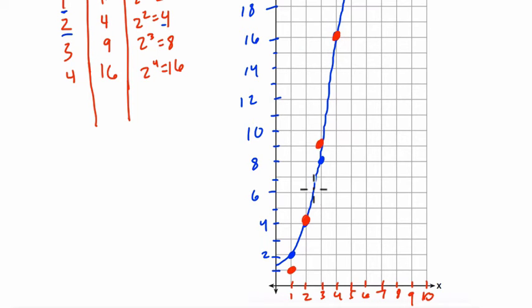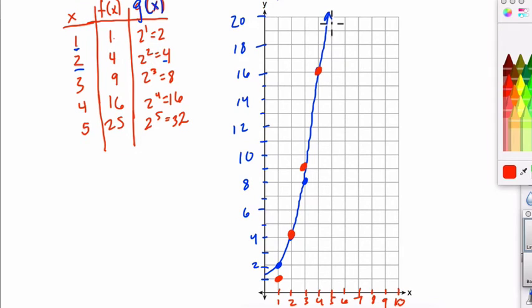Now, before I sketch this, I want to know what's going to happen for 5, which is going to be larger. So if I plug in 5 for f of x, it's x squared 25, but g of x is 2 to the 5th, which is 16 double, or 32. So g of x is surpassing f of x at this point, 5 over here. So when I sketch that, I want to kind of represent that.